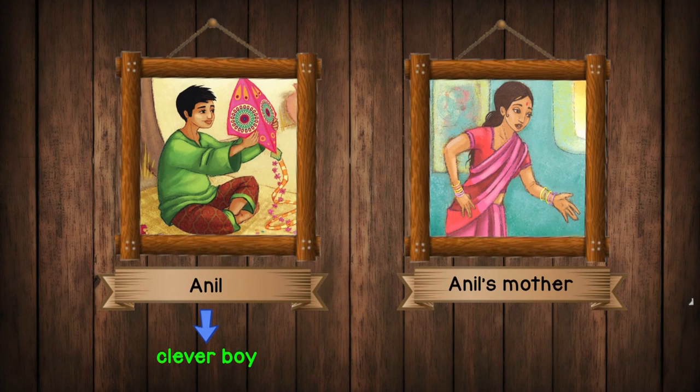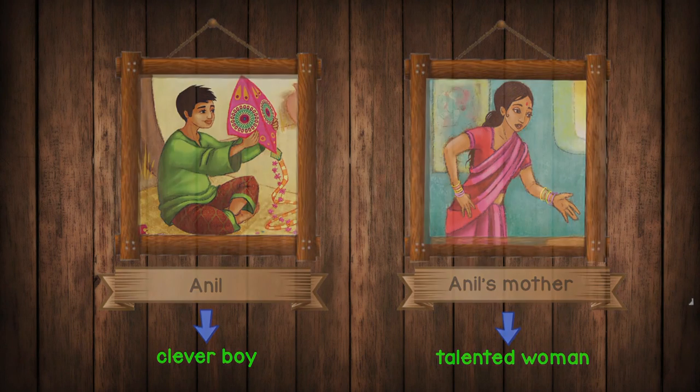And I think Anil's mother is a talented woman because she can sew beautiful clothes. Let's think of other characteristics to describe Anil and his mother. Read the book again and see which event catches your eye. Then think of a suitable adjective to describe the character. Fill in the bubble map for Anil and his mother. Remember, there are no right or wrong answers as long as you can explain why you think that way.